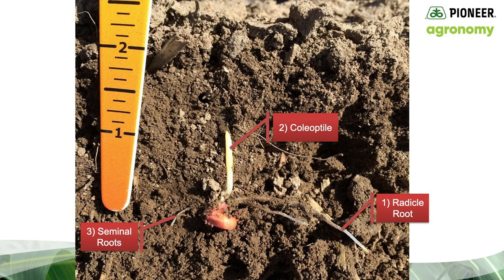Second, the coleoptile — often called the spike — emerges next, within one to several days of the appearance of the radicle, again depending on soil temperatures. And third, the seminal roots emerge next and initially elongate towards the dent end of the kernel. These three structures start the race out of the ground. If anything happens to the radicle, coleoptile, or seminal roots — like insect feeding or disease — the plant may be a runt and the field may exhibit uneven emergence.